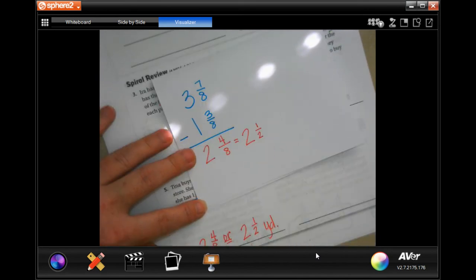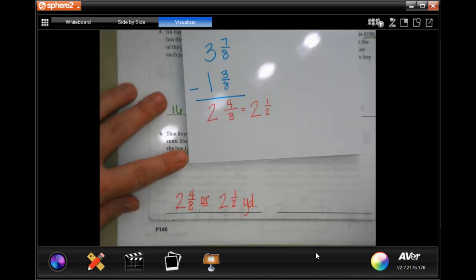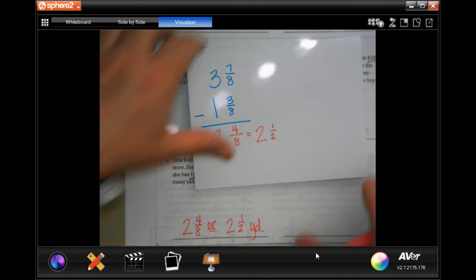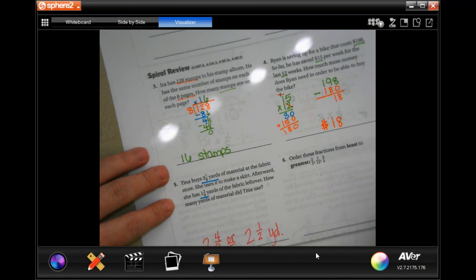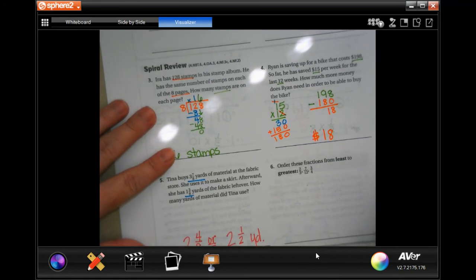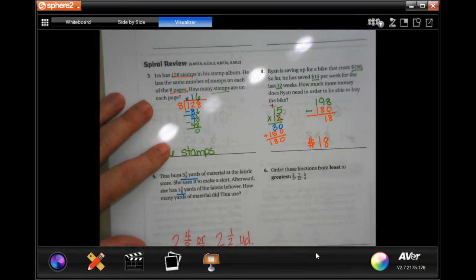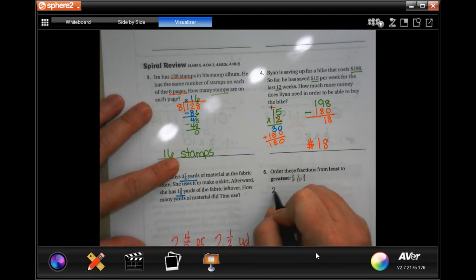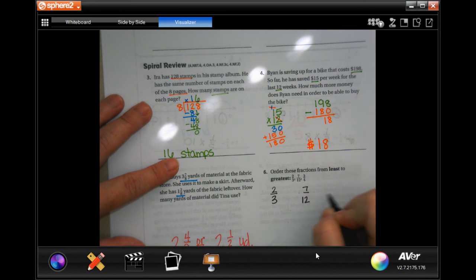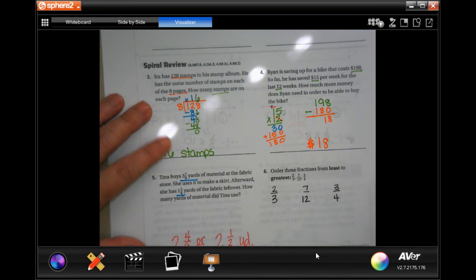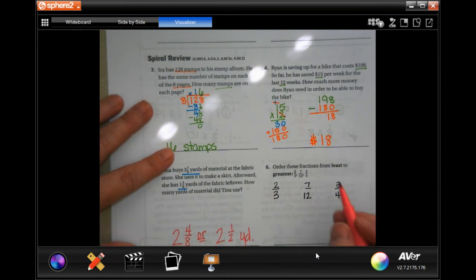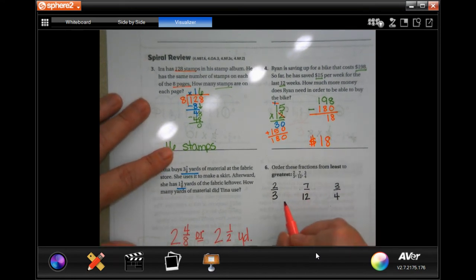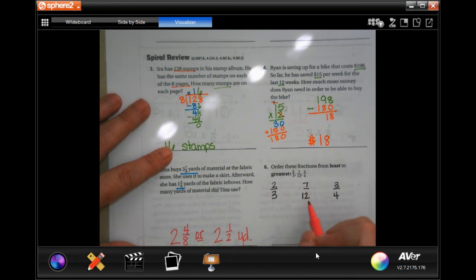Okay, all right, order these fractions from least to greatest. Well, first we need to have them all have common denominators. So I'm going to rewrite them right here. Okay, then we need to have them all have common denominators. So the only number they have in common, the smallest number they have in common, is going to be 12.